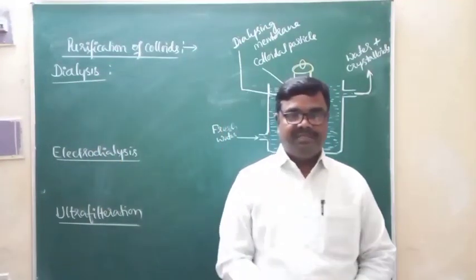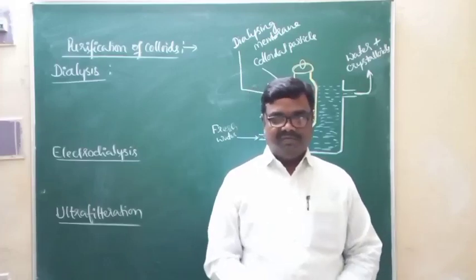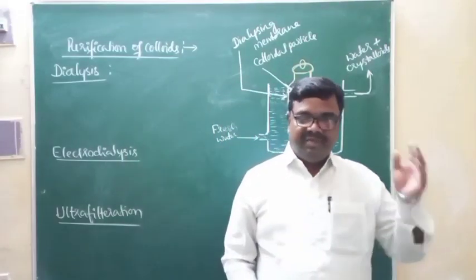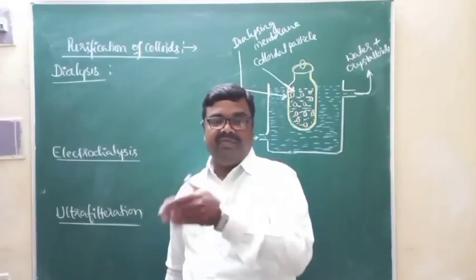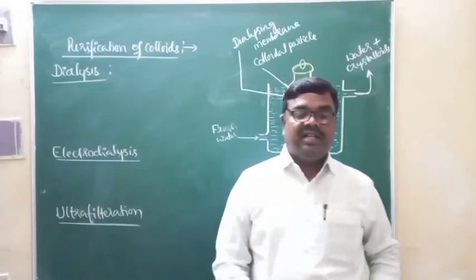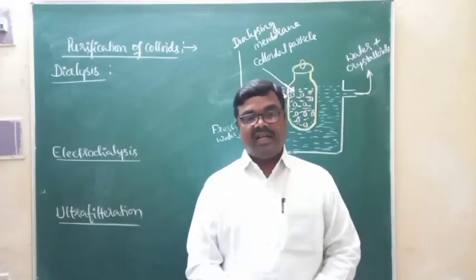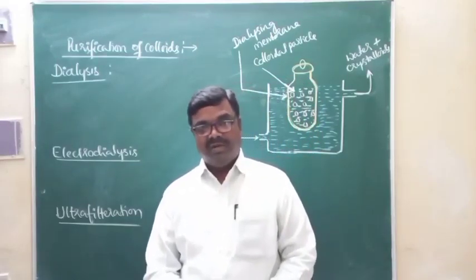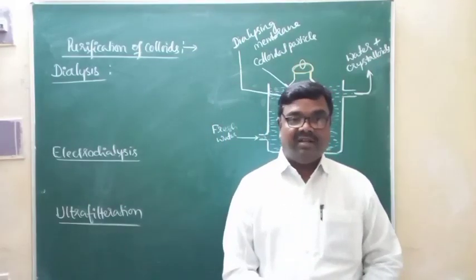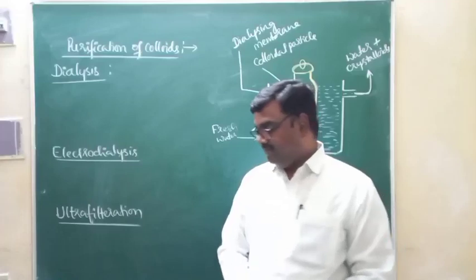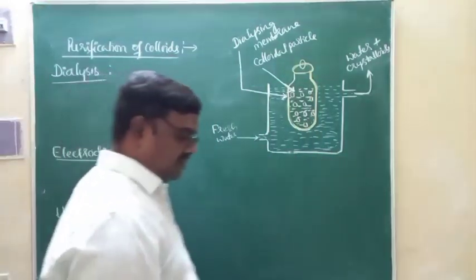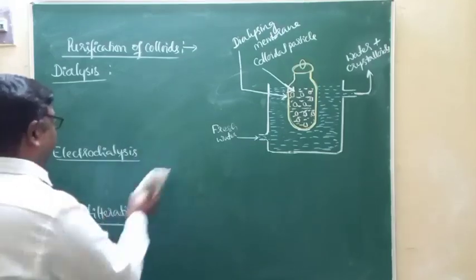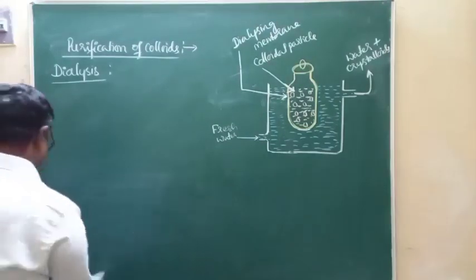Dialysis refers to the removal of dissolved substances from colloidal solution by means of diffusion through a suitable membrane. Membranes used for dialysis include animal membrane (bladder), parchment paper, and cellophane sheet. These membranes are permeable for electrolyte particles and soluble impurities but not for colloidal particles, since colloidal particles are larger than the pore size.